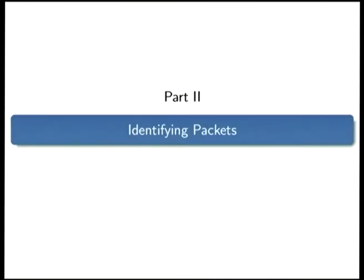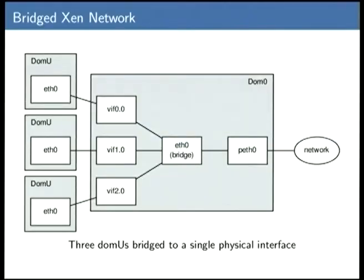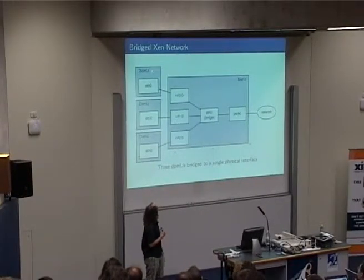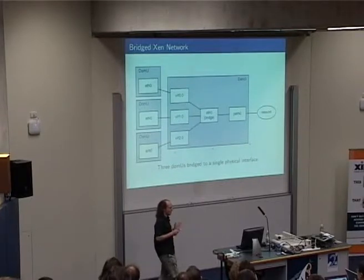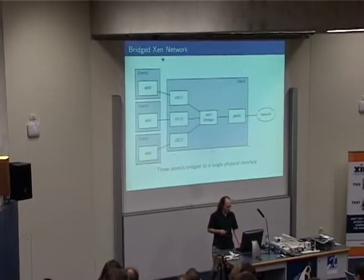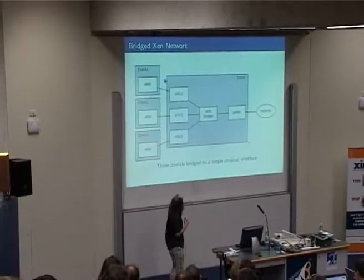That's the background and the foundations of where I'm coming from. If we're going to do flow control on packets coming from guests, we need to be able to identify them — to say this packet came from guest 0, this packet came from guest 1. This is what a bridged network looks like: several guests connected to a host, each with a virtual NIC, all bridged together sharing a single output interface.